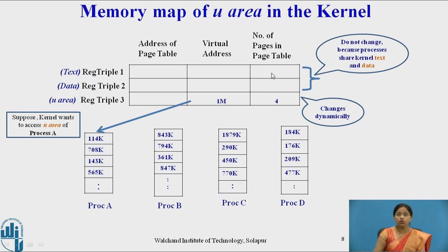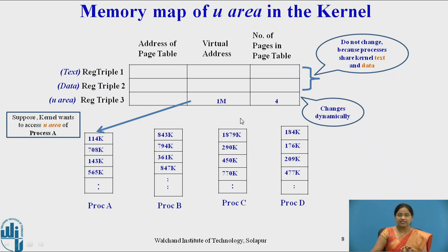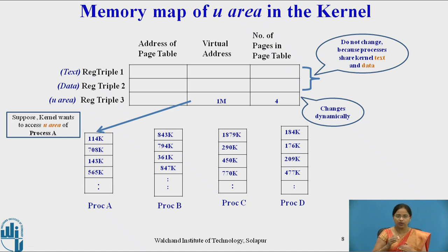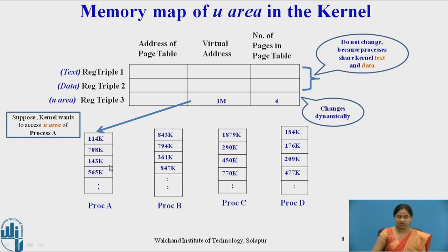The text and data do not change because processes share kernel text and data. The u-area can be accessed only one at a time in kernel mode. Whenever there is a context switch from one process to another, it is necessary to change the virtual address in the u-area in the kernel register triple. This third field present in the kernel register triple changes dynamically whenever there is a context switch from one process to another process in kernel mode.